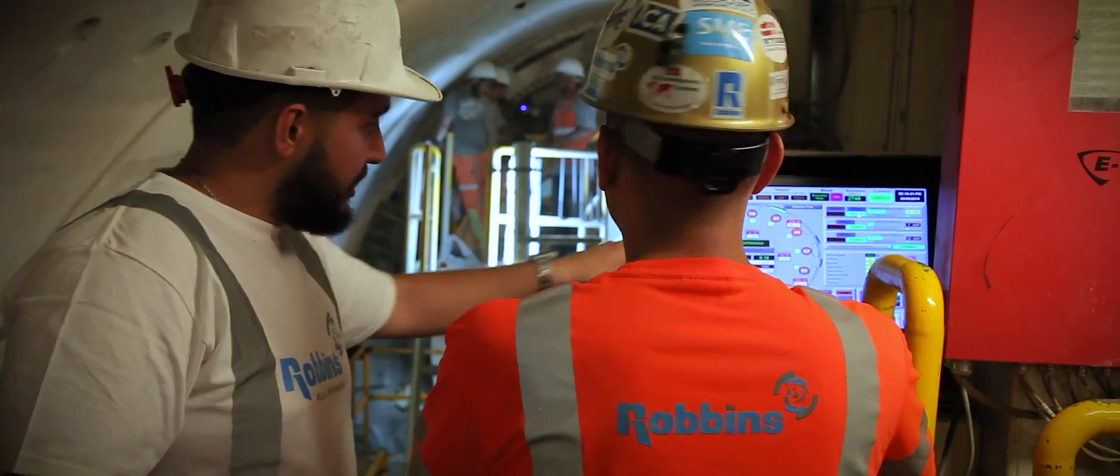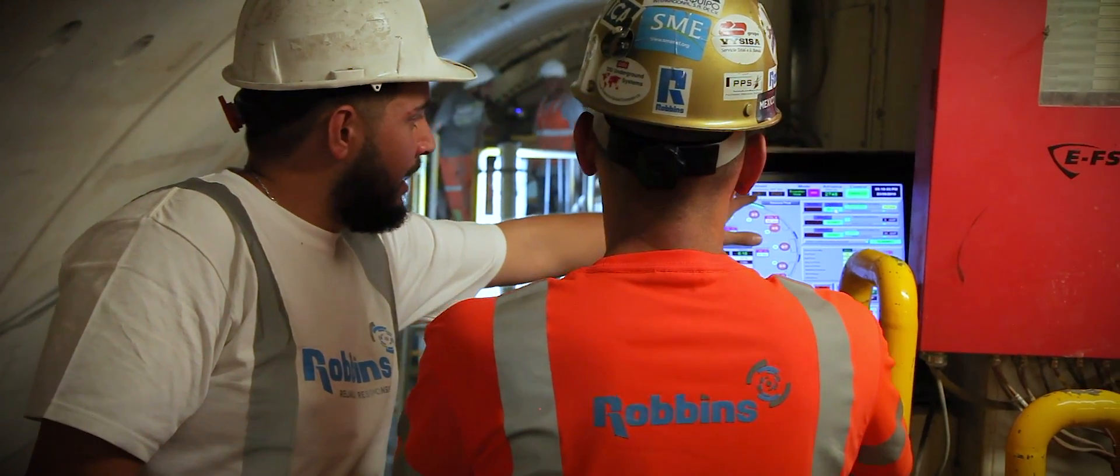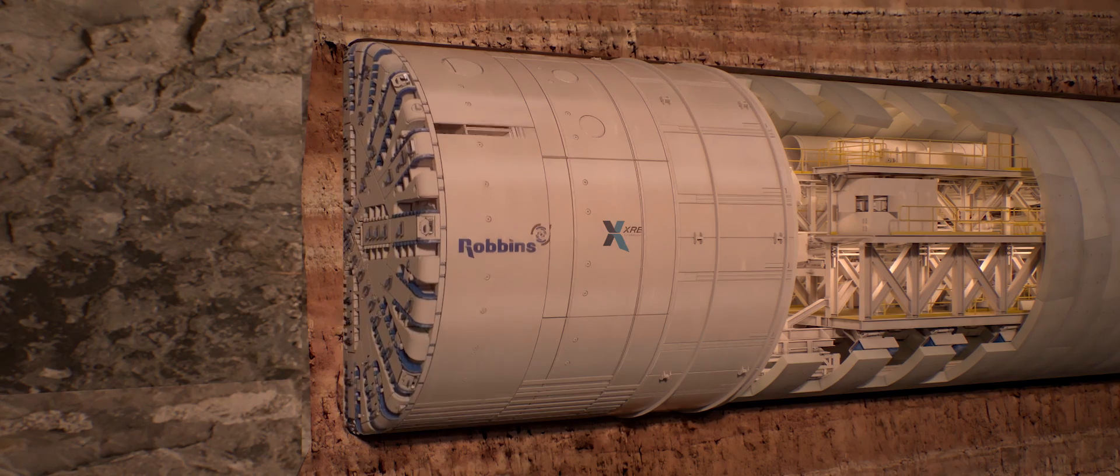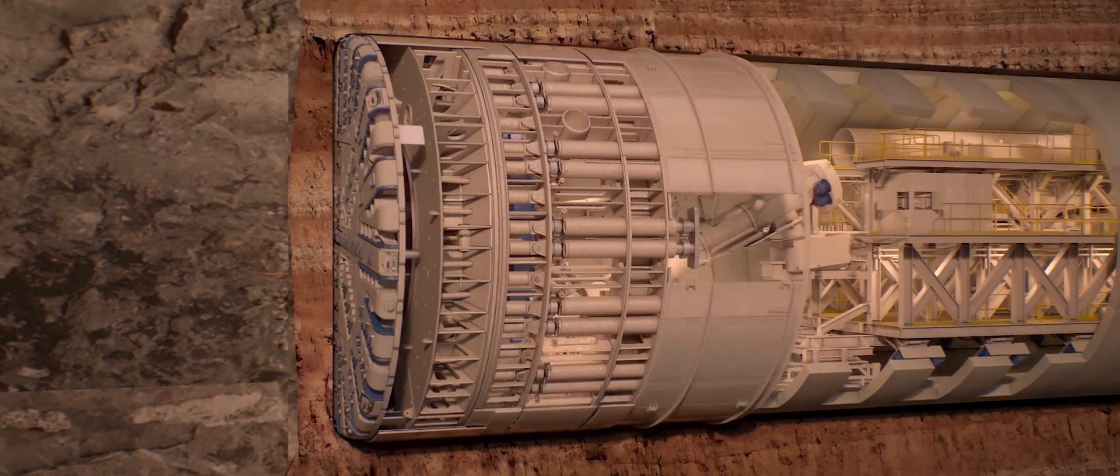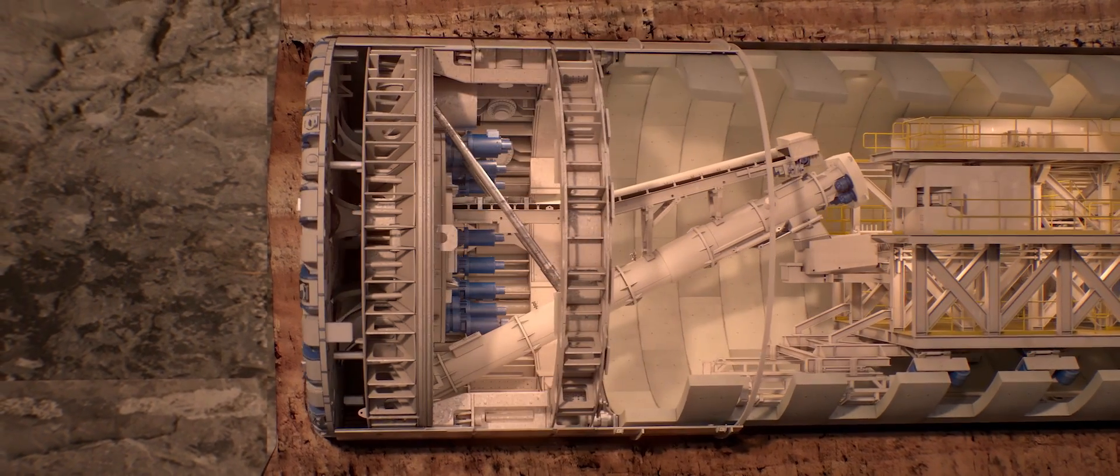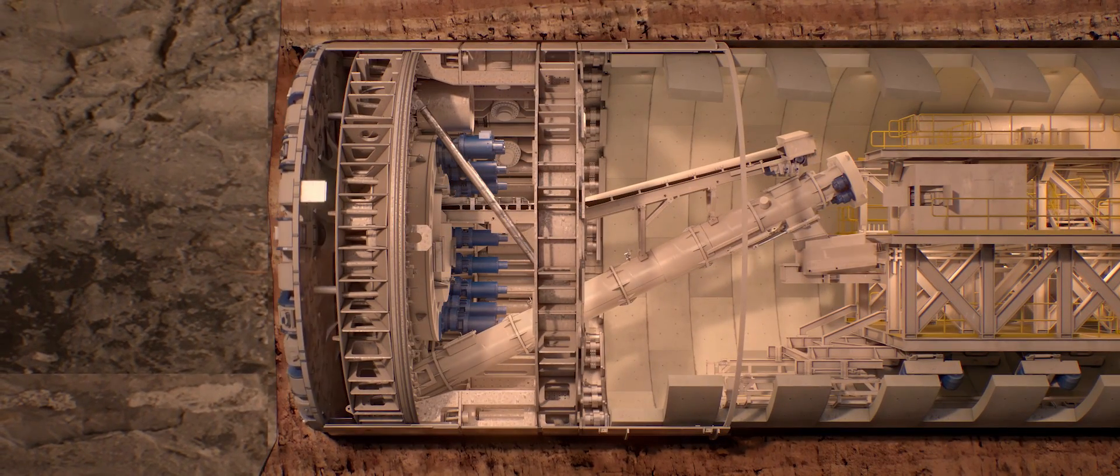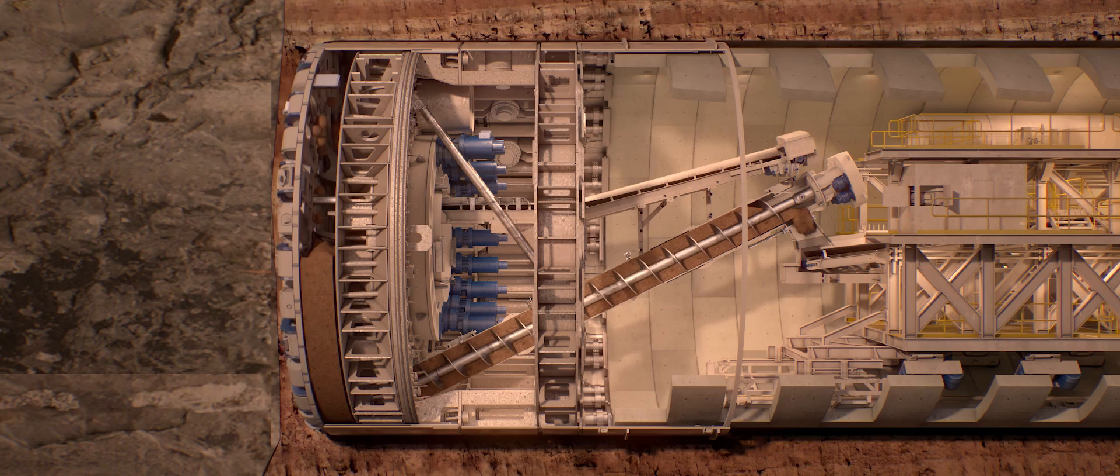At machine diameters eight meters and over, a different type of setup is used for the XRE. Both the screw conveyor and belt conveyor remain in place, allowing for swift conversion between hard rock and EPB modes. In EPB mode, the screw conveyor operates as in any typical EPB machine.